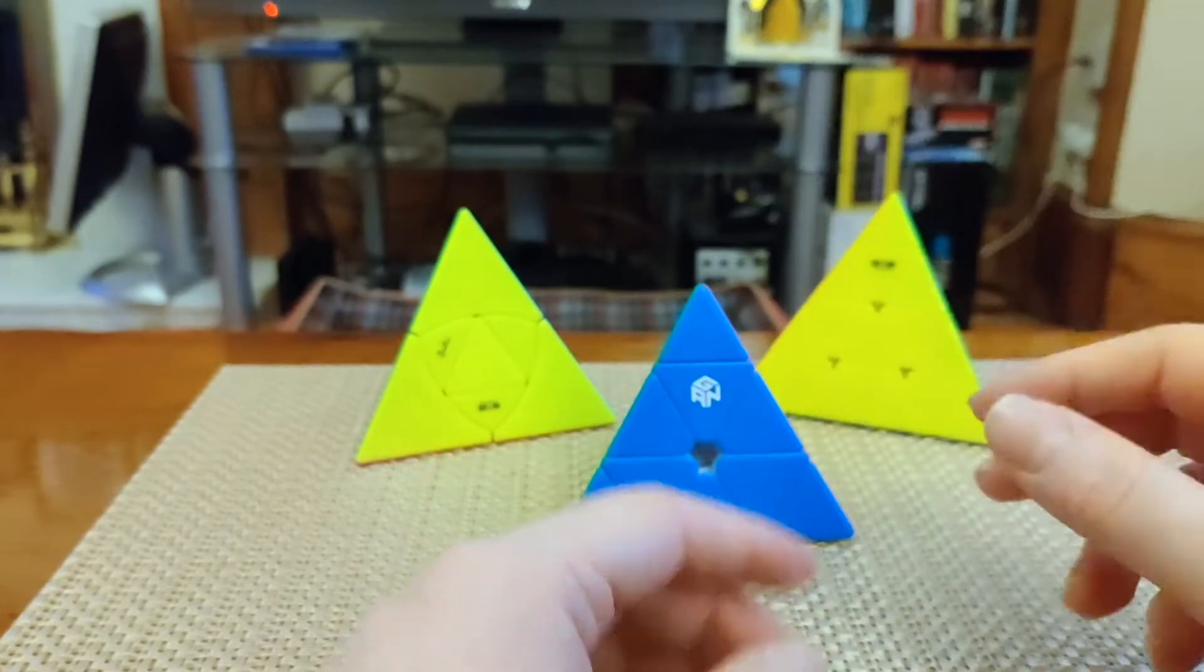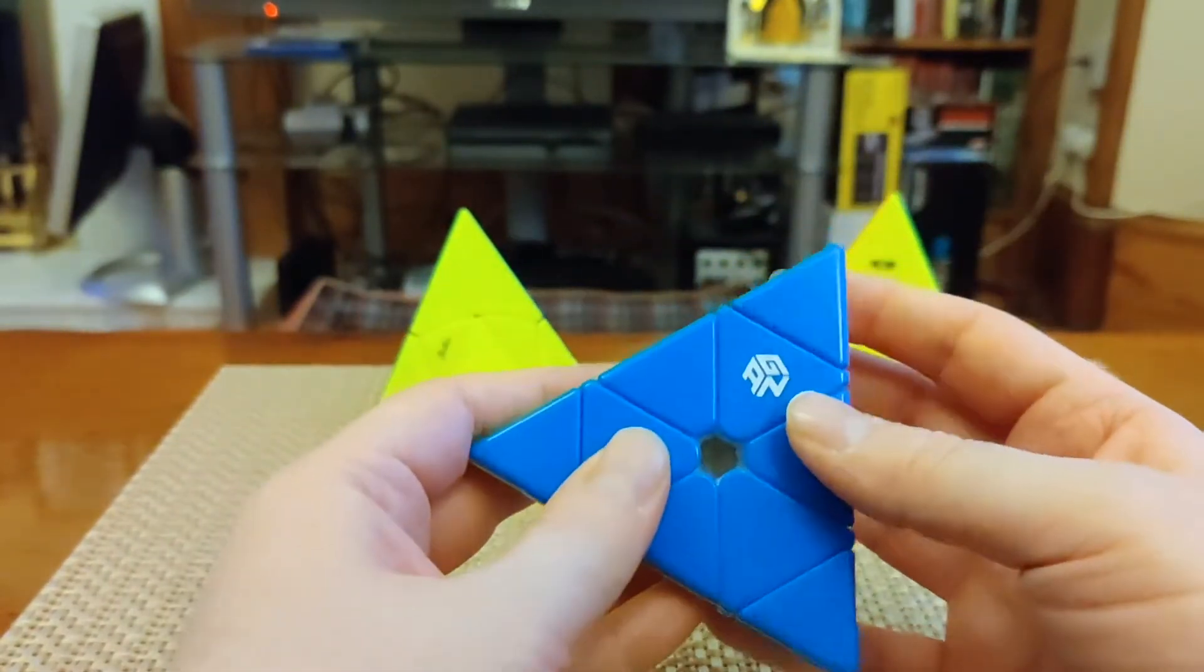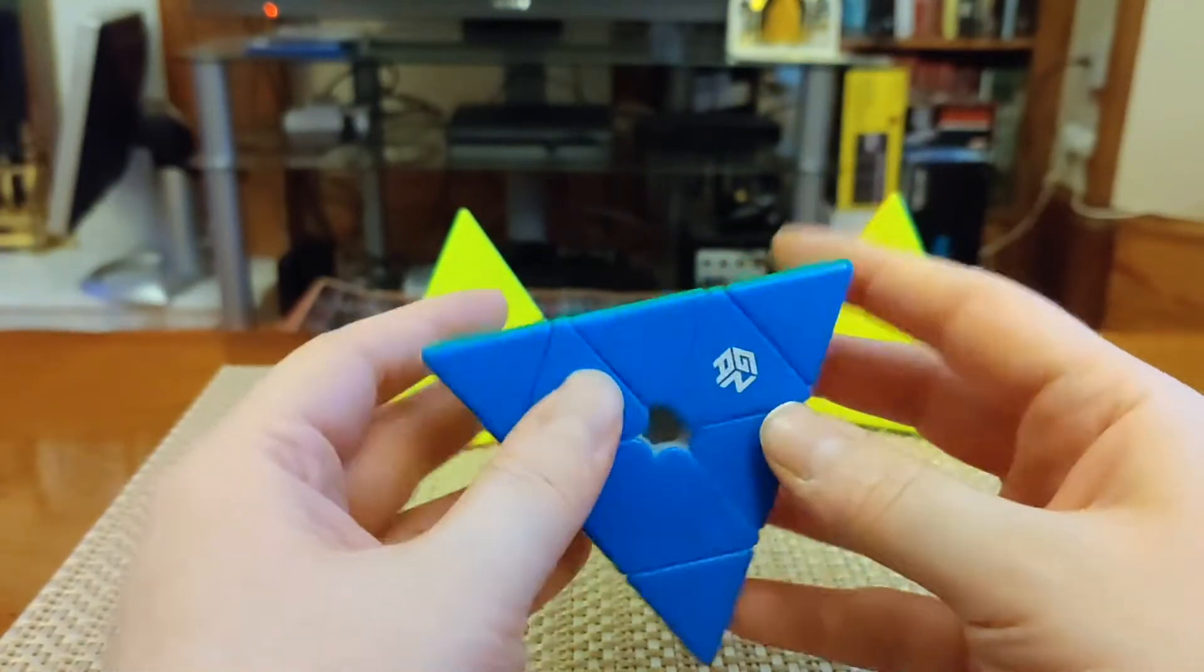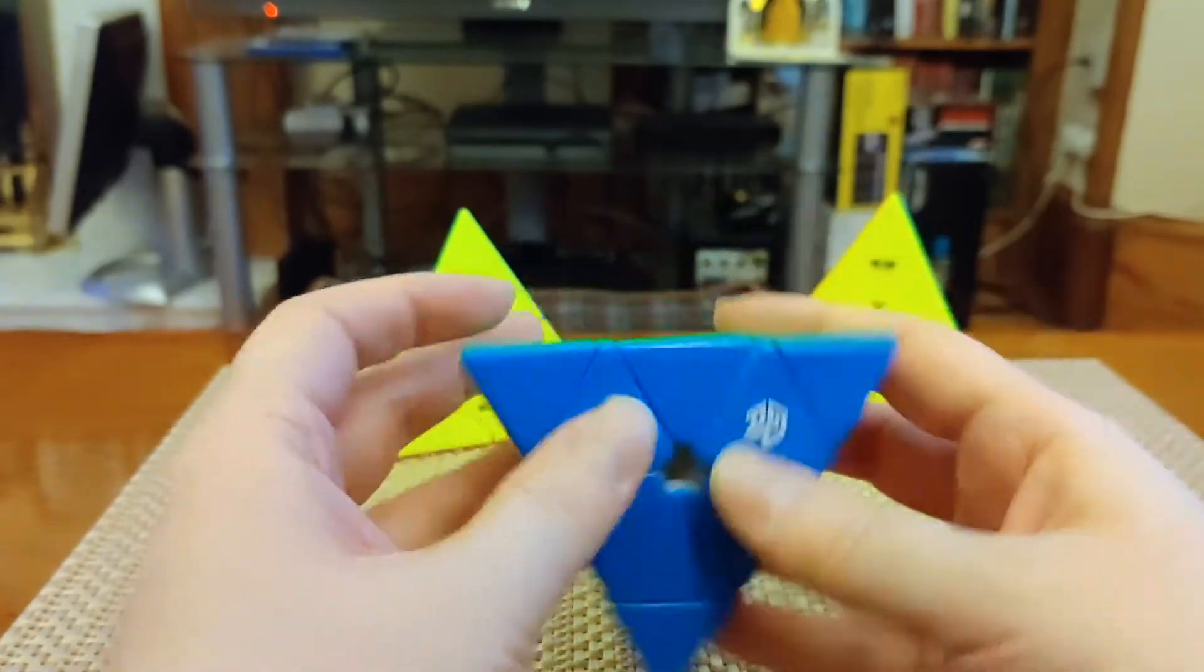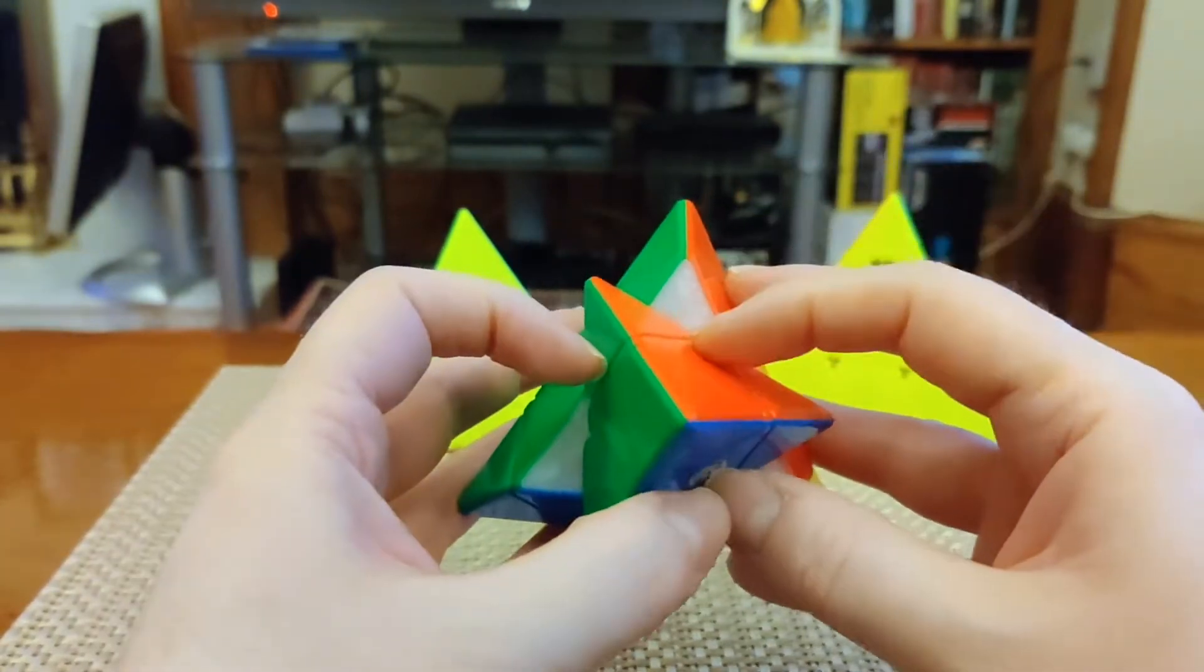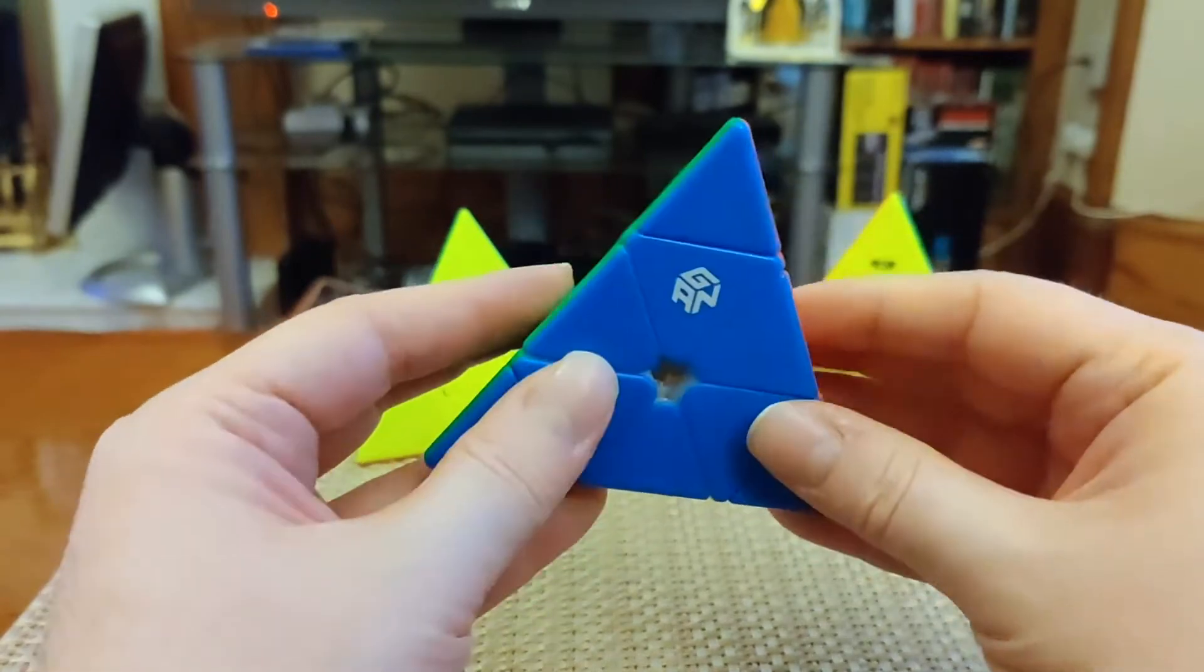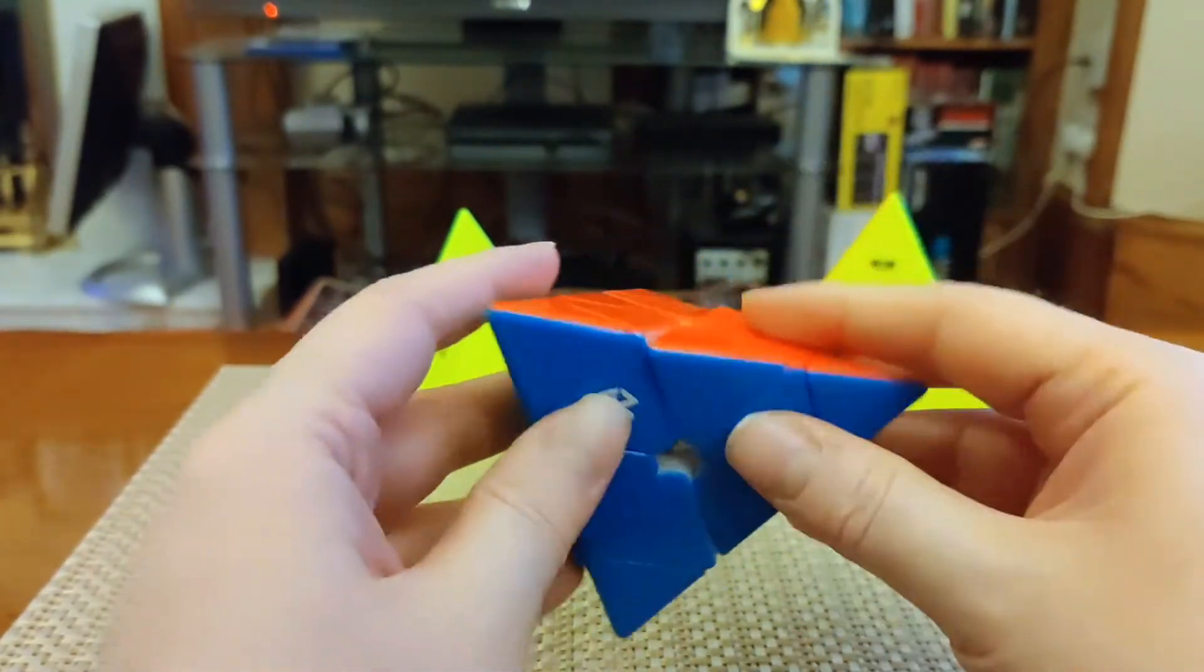Now I'll show you how they work. If we bring out our friend the Pyraminx, we have the famous Trivial Tips. This is a corner turning puzzle. So that layer turns as well as the main chunk. Below the Trivial Tips, we have our corner pieces that have three colors, connected to three edges. Each corner turn moves around three edges as well.